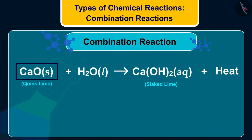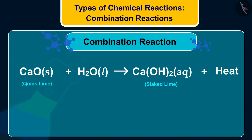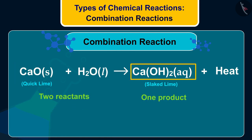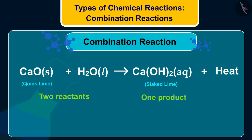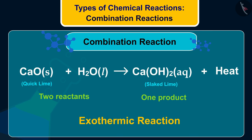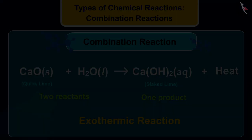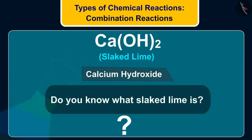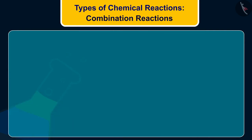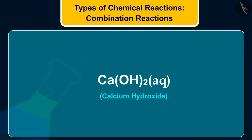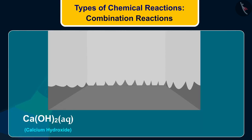You will see that the temperature of the beaker has increased. In this reaction, calcium oxide and water (H₂O) combine to form a single product, calcium hydroxide (slaked lime). Two reactants are forming one product, and heat is being generated. Reactions in which heat is produced along with the formation of the product are called exothermic reactions.